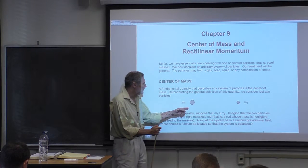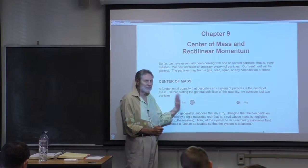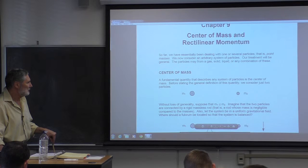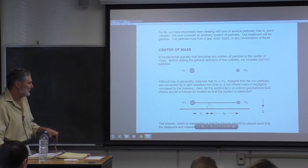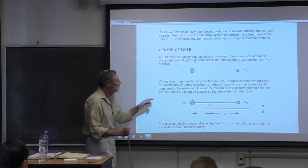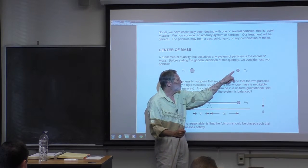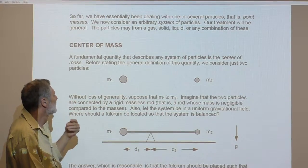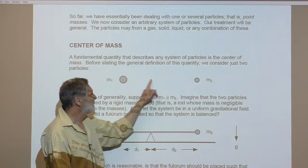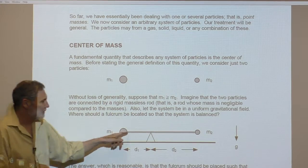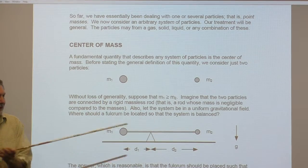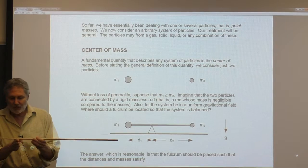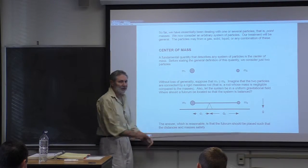M1 and M2, and we'll assume that M1 is equal to or greater than M2. Just to motivate this — we'll be more rigorous in the future — suppose you have a thin massless rigid rod between these two masses. Where is the balance point? Where does it balance in a gravitational field?